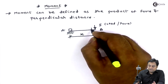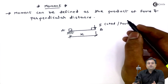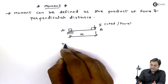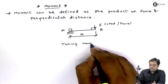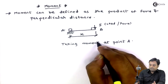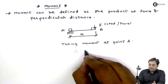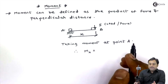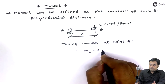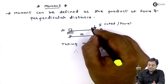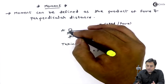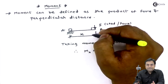The force is perpendicular to the lever or rod. If I take the moment at point A, then the moment at A is equal to the product of force and perpendicular distance — that is, moment at A equals F multiplied by X. So a moment will be produced at point A because of the force applied at point B.